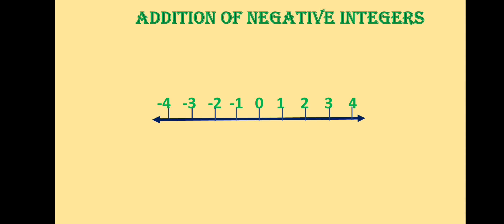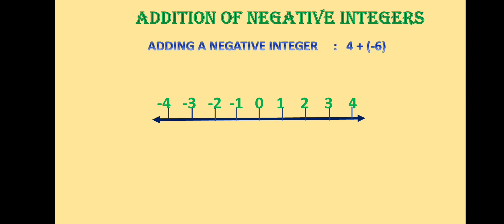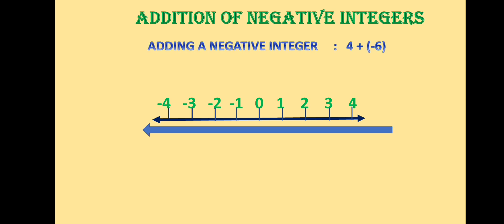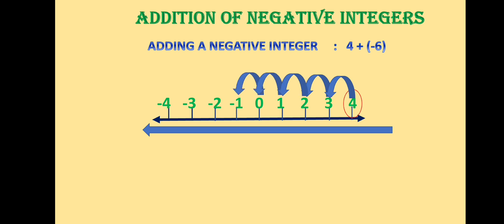For adding a negative integer: when adding negative six to four, we move six places to the left from four. We reach negative two, so the sum is negative two.